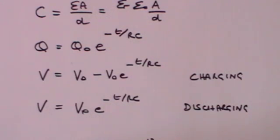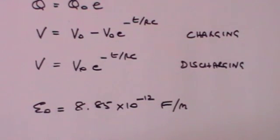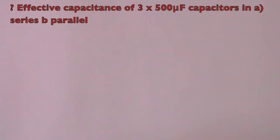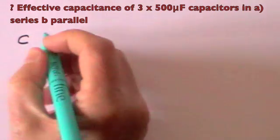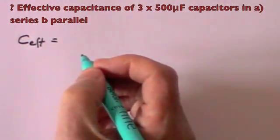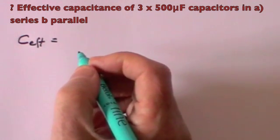The value of the permittivity of free space is usually given as 8.85 times 10 to the minus 12 farads per metre. Question 1: calculate the effective capacitance of three 500 microfarad capacitors when they are A in series and B in parallel. Well let's do parallel first — remember in parallel you simply add up the values.